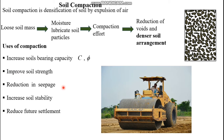Compaction reduces soil permeability, since the void spaces are reduced — there is a reduction in pore voids — so the soil will have less permeability, resulting in reduced seepage. Compaction also increases soil stability and reduces future settlement.